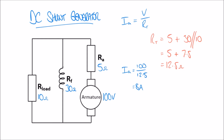We run into another problem though: although the armature puts out 8 amps, at the junction that current is going to split — some of the 8 amps will go through the field windings and some will go through the load. We're interested in the output current of our generator, so it's the load current we want, and it's not going to be the full 8 amps.